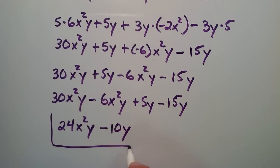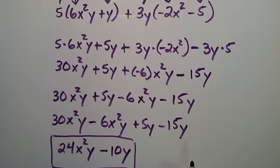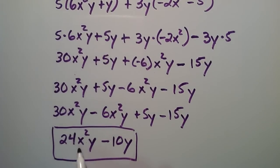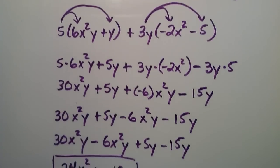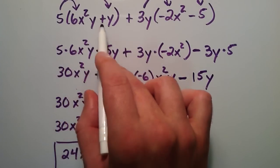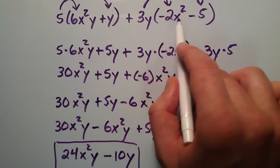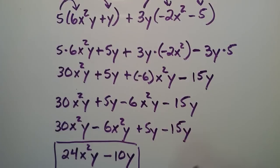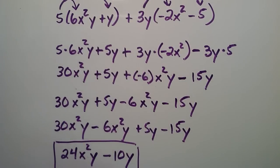So this right here is our simplified expression. Basically, 24x squared y minus 10y is equal to what we started with: 5 multiplied by the quantity 6x squared y plus 5y, plus 3y multiplied by the quantity negative 2x squared minus 5. That is exactly the same thing as writing 24x squared y minus 10y. This is just a simplified form of what we started with. That's how you can simplify a variable expression.